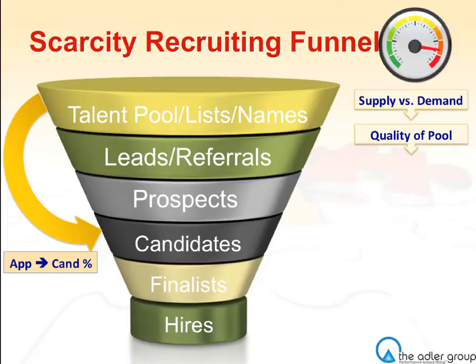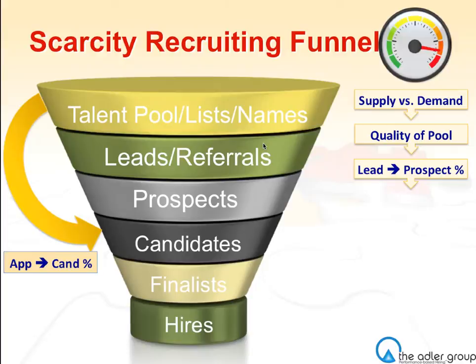One key statistic is your applicant-to-candidate ratio — someone who applies versus someone you decide is a serious candidate to present to a hiring manager. If that's 1% or 2%, you're spending a lot of time fishing in the wrong marketplace. Another metric: what's your leads-to-referrals ratio to get to a prospect? Someone who looks good, is qualified, and is at least open-minded to talk to a hiring manager — that's what I consider a prospect. Then how long does it take to build a group of prospects to present to your hiring manager?